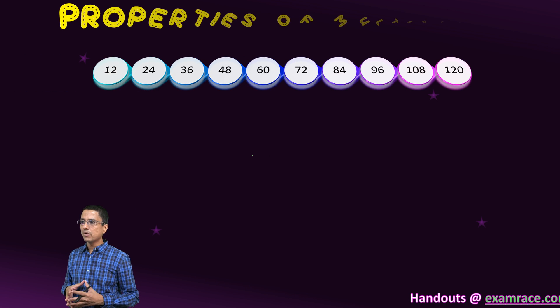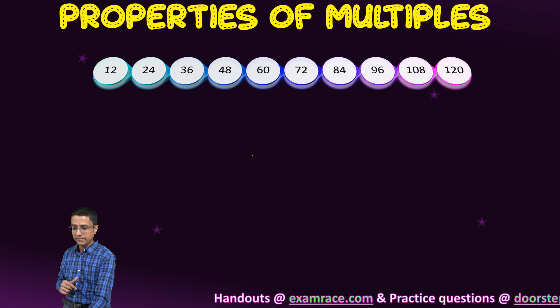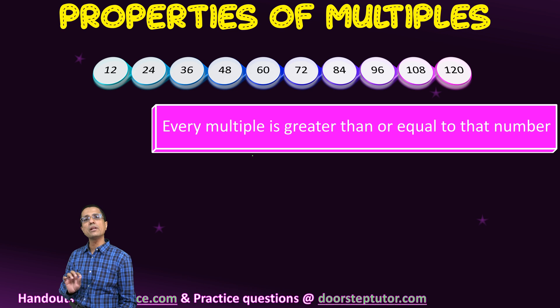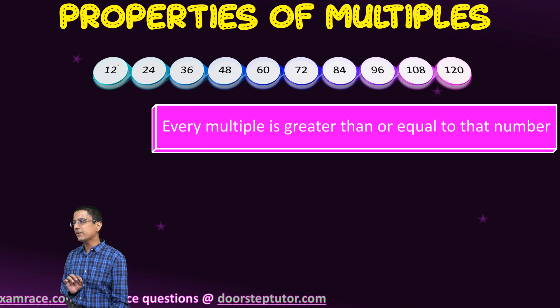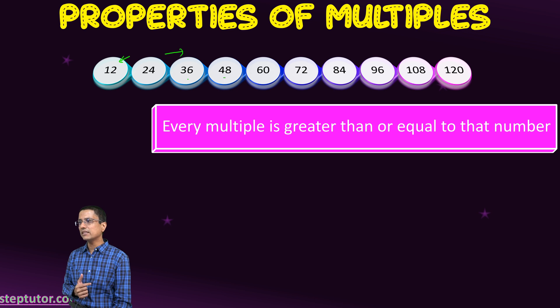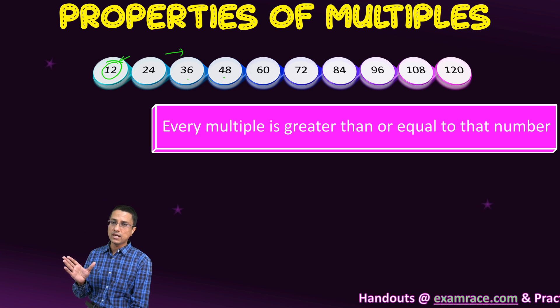Now with that, let us look at some of the properties of these multiples. Properties of multiples are actually important. The very first property is that all the multiples of a number either is equal to that number or greater than that number, which we understand. Because all of these numbers, the multiples are found by multiplying the number 12 with another number. So obviously, they have to be greater than the number itself.